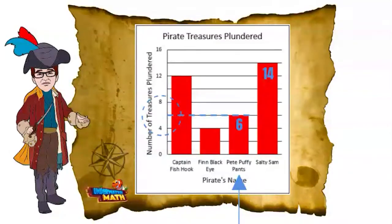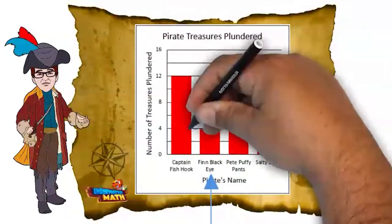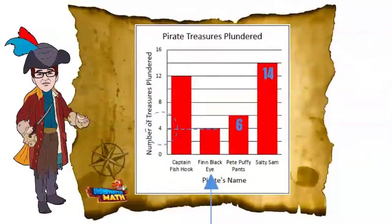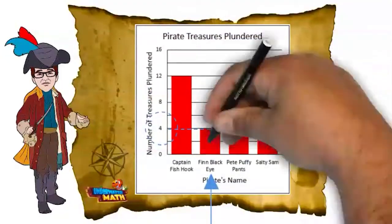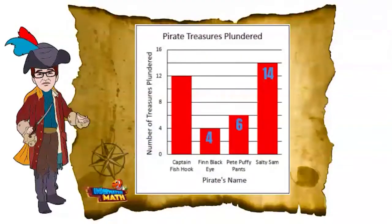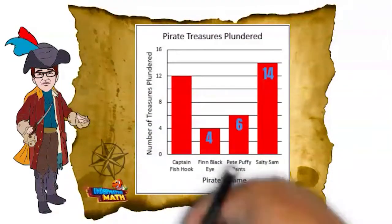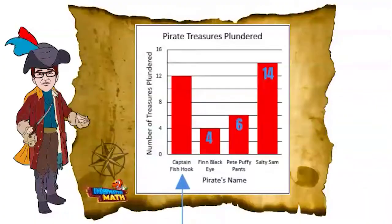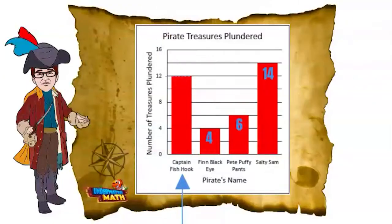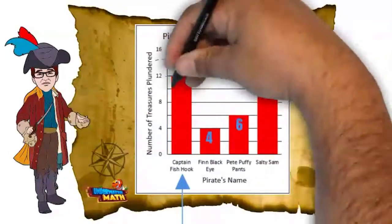The bar for Finn Black Eye goes up to the 4 line, so we know that Finn Black Eye plundered 4 treasures. Now look at my bar — I am Captain Fish Hook. It goes up to the 12 line. I plundered 12 treasures.